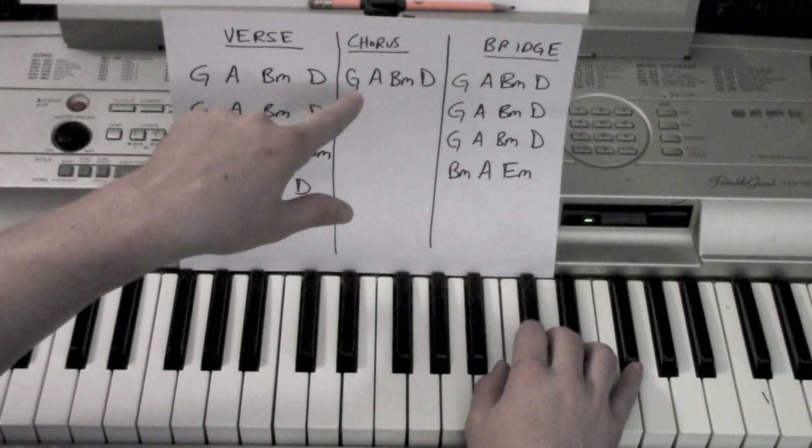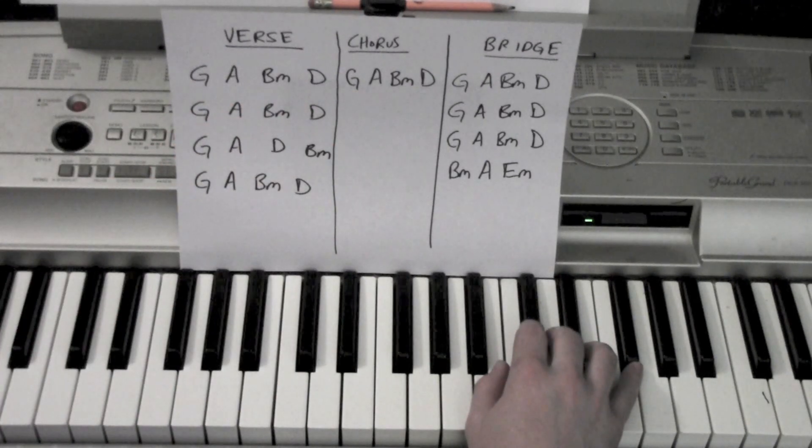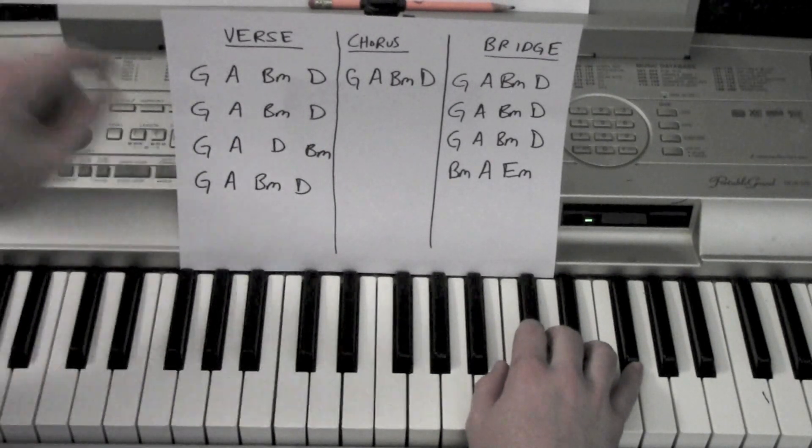Now we're on the chorus. The chorus just follows this: G, A, B minor, D, over and over again. Good, so starting from the beginning.